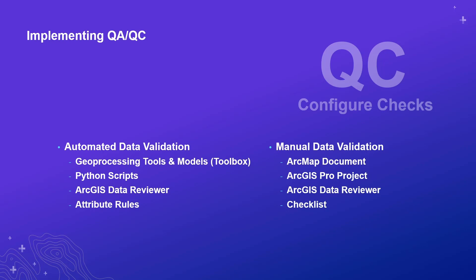There will also be times when you need to do manual data validation, so set that up properly as well. Whether it's creating an ArcMap MXD with the proper symbology, layers, and definition queries, or creating a Pro project with those layers and symbology — there's a lot you can check visually. Data Reviewer has a nice tool to systematically go through a grid and review it, keeping track of what's been reviewed and what hasn't. I also recommend creating a checklist of what you're looking for during visual validation, such as checking for proper placement and proper coding.